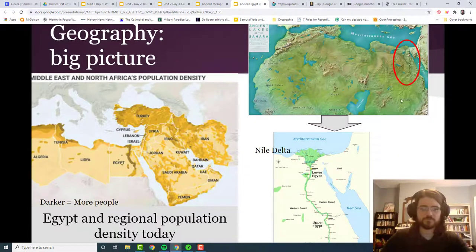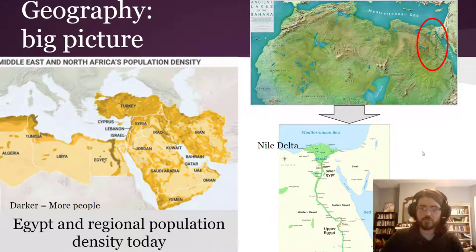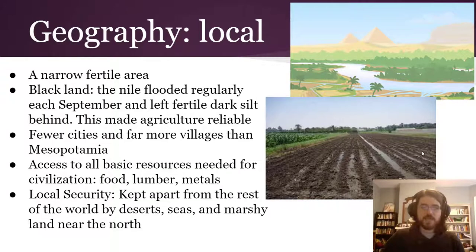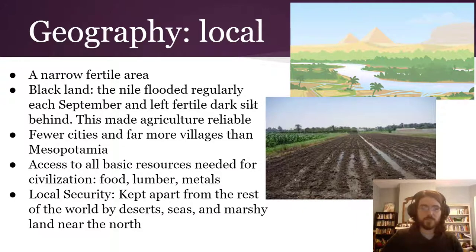Back to the PowerPoint — this is right where we're talking about, in the northern part of Africa, close to the Fertile Crescent. In terms of local geography, it was a really narrow, fertile area. The Egyptians called that the Black Land because it had really fertile soil. The reason it was fertile is because the Nile flooded on time every year in September and left this dark silt behind — a mineral-rich soil that plants really enjoy. That made agriculture very reliable in Egypt, much more so than in Mesopotamia.